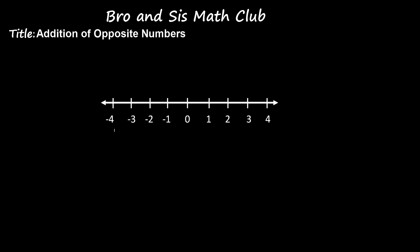Here we have a number line. In the center of the number line, we have the number 0. To the right of the number line, we have the positive numbers. And to the left of the number line, we have the negative numbers.